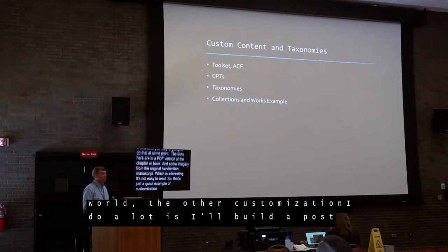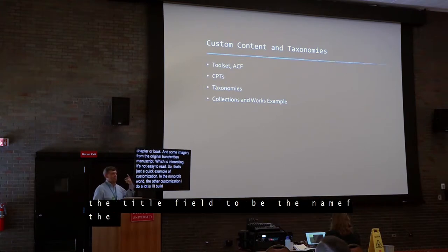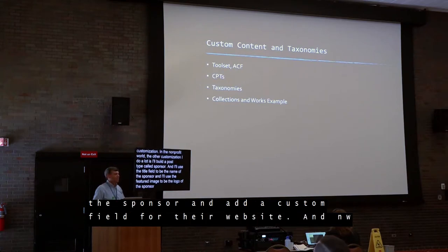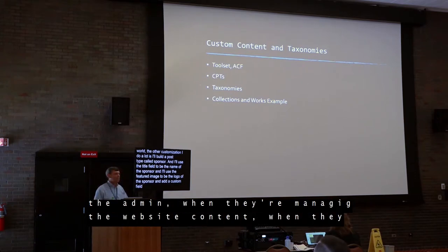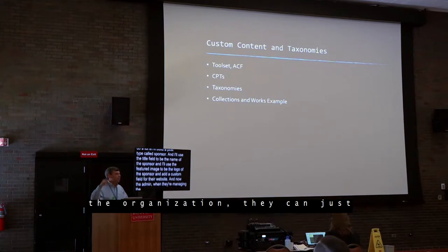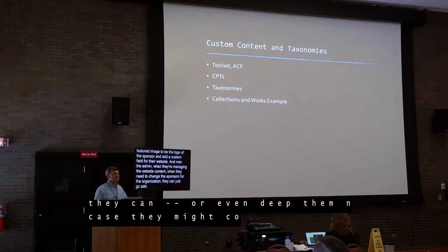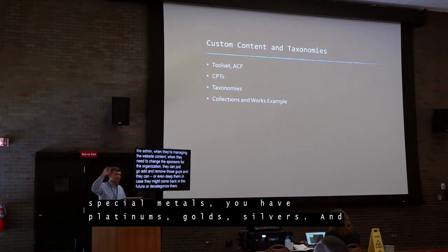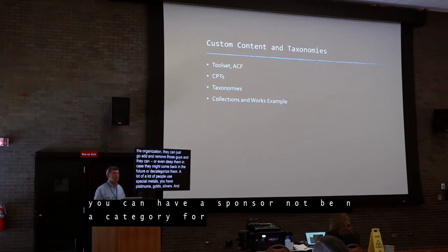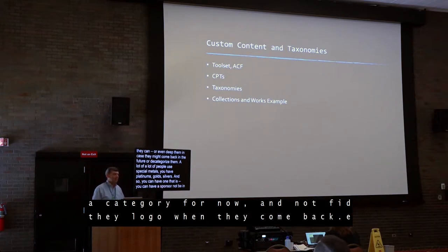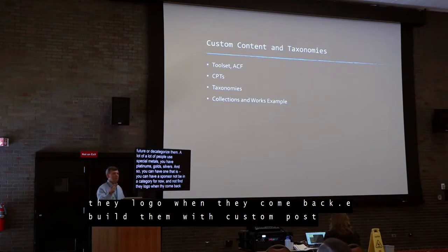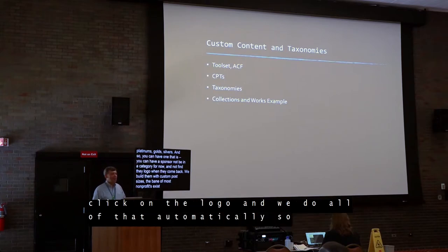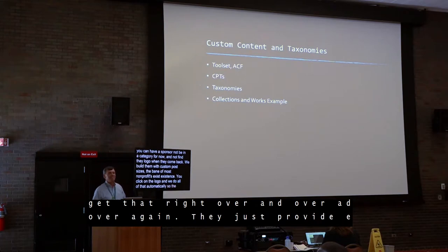In the nonprofit world, another customization I do a lot is building a post type called 'sponsor.' I use the title field for the sponsor name, the featured image for their logo, and I add a custom field for their website URL. Now whoever manages the website can just add and remove sponsors — or keep them decategorized if they might come back. A lot of organizations use precious metals for categorizing sponsors: platinum, gold, silver. Then we build the views that display them with uniform logo sizes — the bane of most nonprofits' existence — laid out in a nice grid where clicking the logo takes you to their website. The admin just provides the content; the rest takes care of itself.